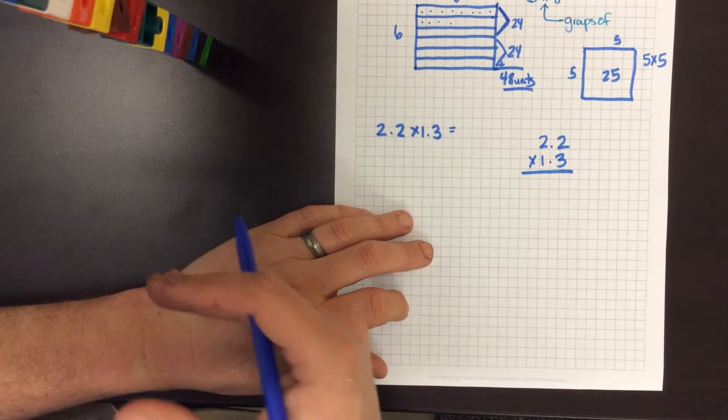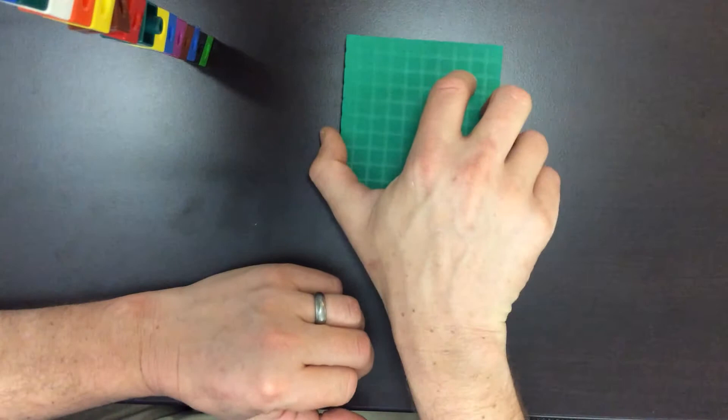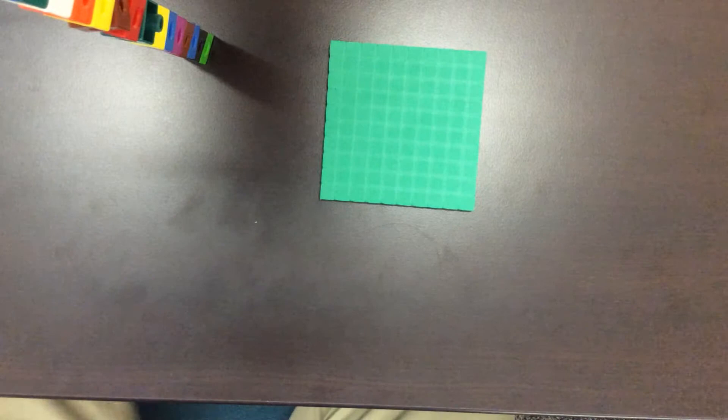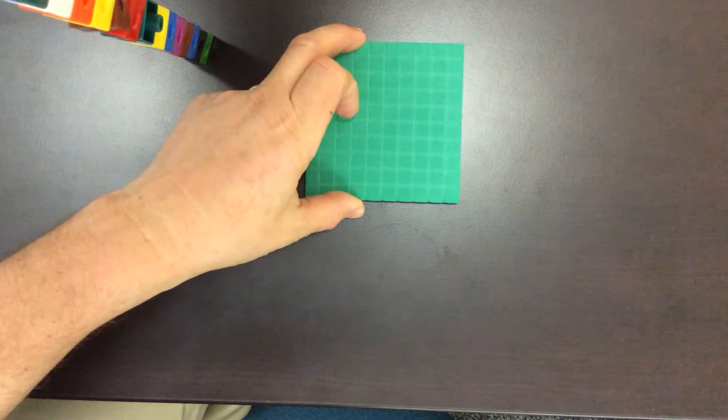So we're going to start off using base ten blocks. Now base ten blocks are great because we can use them for whole numbers as well as decimals. When we're dealing with numbers that are greater than one we use these as one hundred, a hundred block. When we're dealing with numbers that are less than one we can create these as now being seen as one whole.